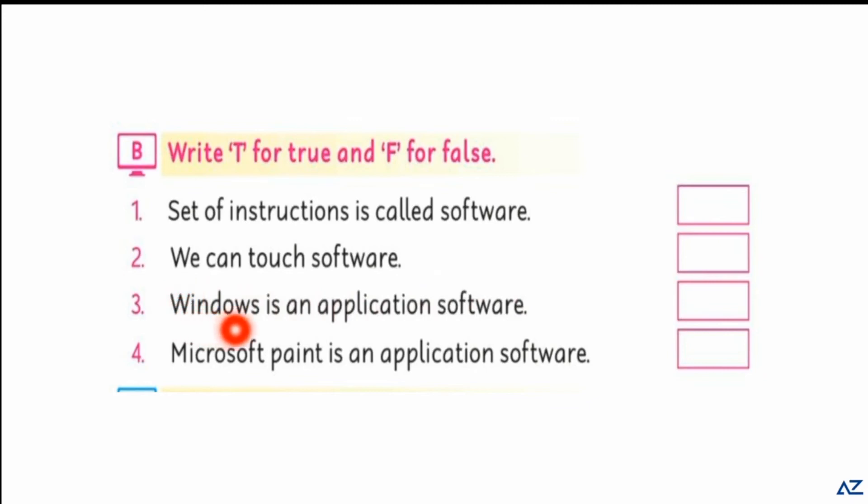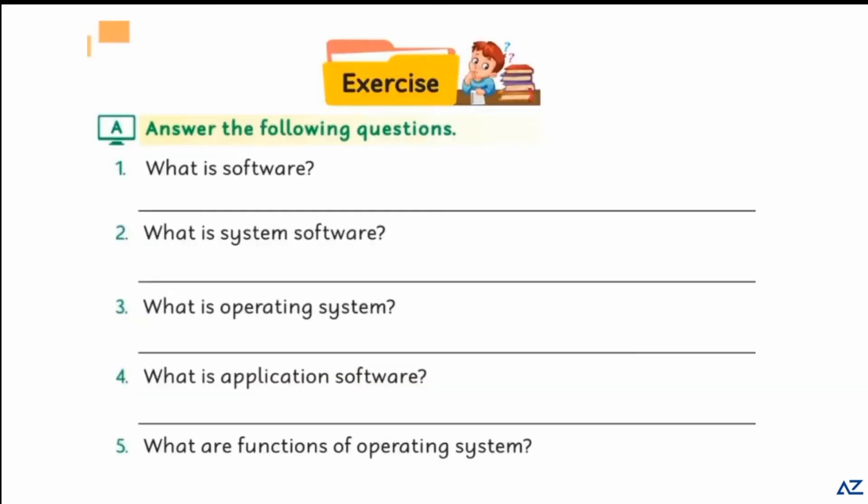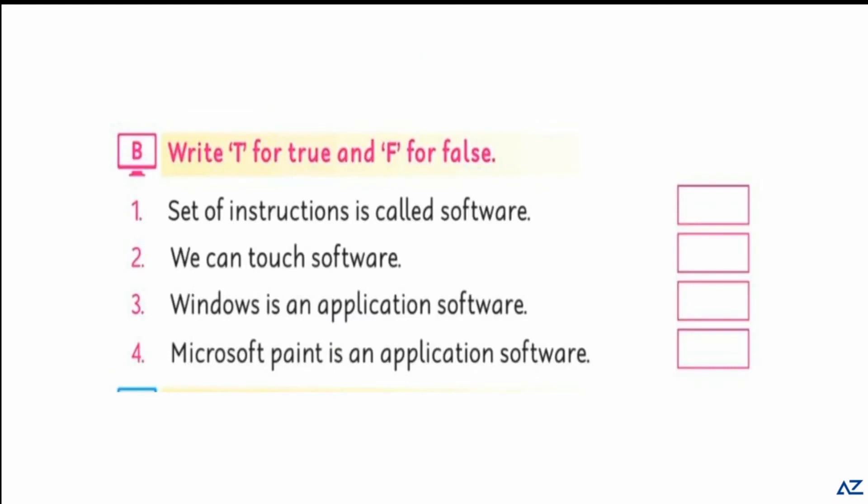Windows is an application software - wrong. Microsoft Paint is an application software - right. Circuits, you will learn the question answers by heart and write the answers in your book and write true false here.